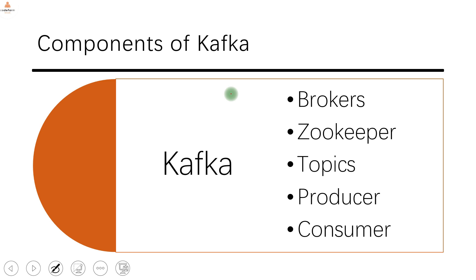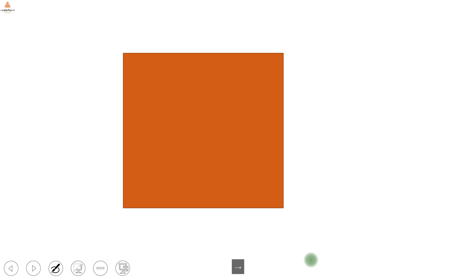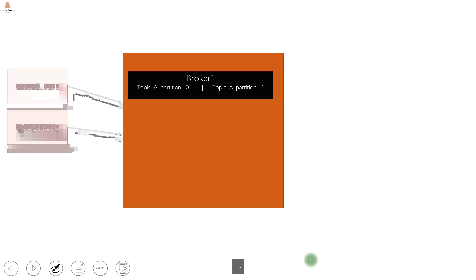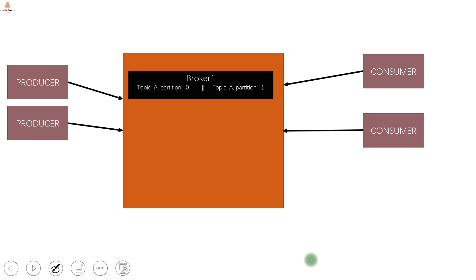These are the components of Kafka: brokers, zookeepers, topics, producers and consumers. This is what forms the Kafka ecosystem. When we say the word Kafka, Kafka is a software — it's a service in itself — which is installed on a single machine where producers are sending the events and consumers are listening.